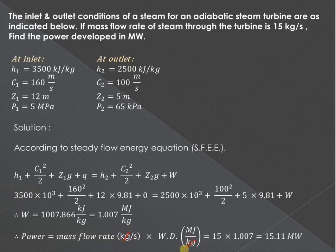So this kg kg will get cancelled - we'll get megajoule per second, that is nothing but a megawatt. So power developed is 15 into the mass flow rate. We can calculate the power developed. Mass flow rate is given as 15 and work done in megajoule per kg is 1.007, so answer is 15.11 megawatt.